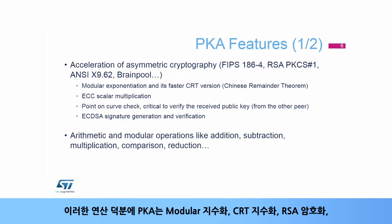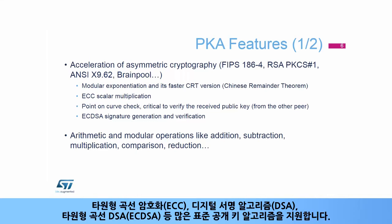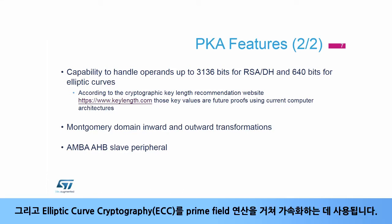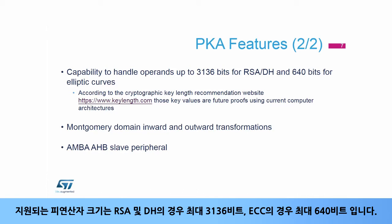Thanks to these operations, the PKA supports many standard public key algorithms: modular exponentiation, CRT exponentiation, RSA cryptography, Elliptic Curve Cryptography (ECC), Digital Signature Algorithm (DSA), and Elliptic Curve DSA (ECDSA). The PKA is used to accelerate RSA (Rivest–Shamir–Adleman), Diffie-Hellman (DH), and ECC over prime field operations. Supported operand sizes are up to 3136 bits for RSA and DH, and up to 640 bits for ECC.